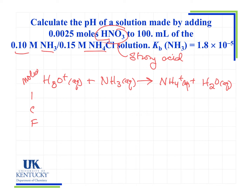I was already told the moles of the strong acid: 0.0025 moles. For the ammonia, I take the molarity of 0.10 moles per liter and multiply by the volume of the buffer. If it's 100 milliliters, that is 0.1 liter, giving 0.01 moles of ammonia.